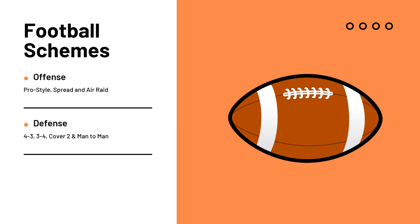On defense, the 4-3 provides a good balance between stopping the run and defending the pass — four down linemen and three linebackers. The 3-4 has three down linemen with four linebackers, creating confusion and pressure on the quarterback, with flexibility in disguising blitzes and coverages. Cover two provides solid coverage against both run and pass using two deep safeties to prevent big plays, forcing offenses to execute underneath — meaning more plays must be produced, increasing the likelihood of a mistake. Finally, man-to-man offers tight coverage on receivers, disrupts timing in the passing game, and allows for more aggressive blitzing.